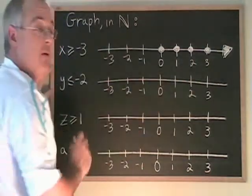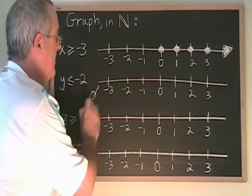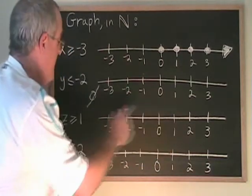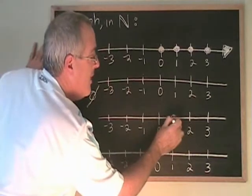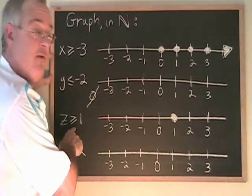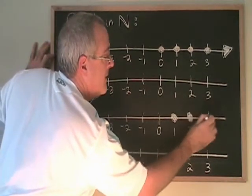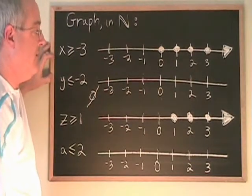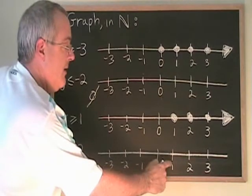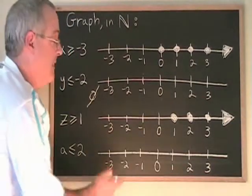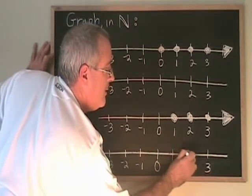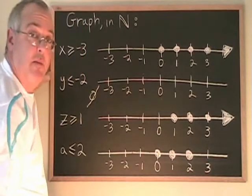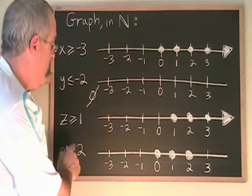There are none. We can leave a blank number line to express this, or we can use the empty set symbol, which is this circle with a line through it. z greater than or equal to 1 — now, 1 is a natural number and it is equal to itself, so 1 will be part of our answer. All of the natural numbers that are greater than 1 will also be part of our answer, so 2 and 3, and we can draw an arrow to show that the answer continues on forever in the positive direction. a less than or equal to 2: these numbers here are all less than 2, and 2 is equal to 2, so we put 2 first. Then 1 is less than 2, so we put a dot. 0 is less than 2, we put a dot. But then we have to stop because the other numbers are negative — they are not natural numbers, so they are not part of the answer.